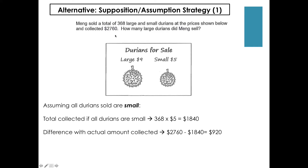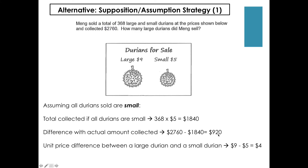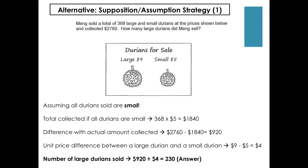This is obviously very different from the actual amount collected, which is $2,760. The next step is to find the difference between the actual amount collected and the amount collected if we assume all durians are small — the difference is $920. Then I find the unit price difference between a large durian and a small durian: $9 minus $5 gives $4. To find how many large durians were sold, I divide $920 by $4 and get the answer of 230 large durians.